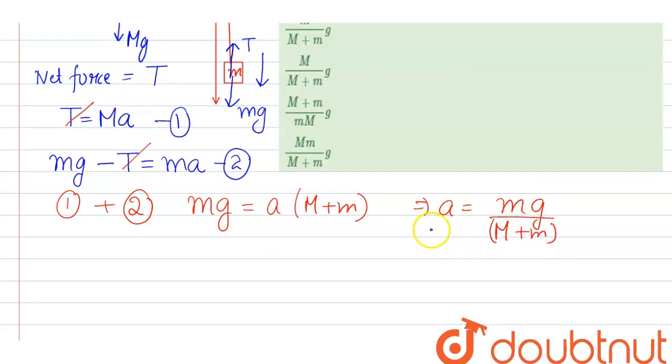Now substituting the value of acceleration in equation first. So T equals Ma. Now putting the value in this equation and we get tension equals capital M times small m times g over capital M plus small m.